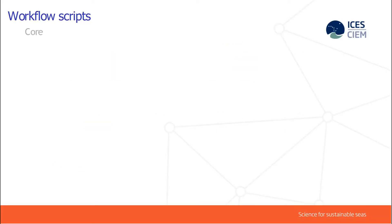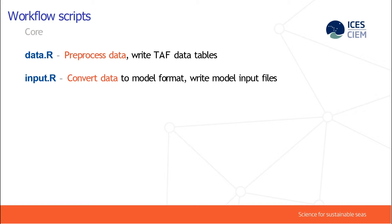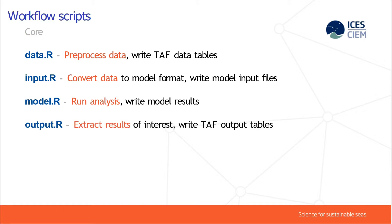Let's take a look at those scripts in more detail. The first one is data.r, where we pre-process the data and write out what we call TAF data tables — very simple cross-tab text files, comma-separated values. The next step is input.r, where we convert those data to the model-specific format, writing out the model input files. In model.r, we run the analysis, often just invoking a shell command or an R package to run the model, and the results will be written out as output files. We then extract the results of interest in output.r — things like numbers at age and fishing mortalities — and write them out as text files.